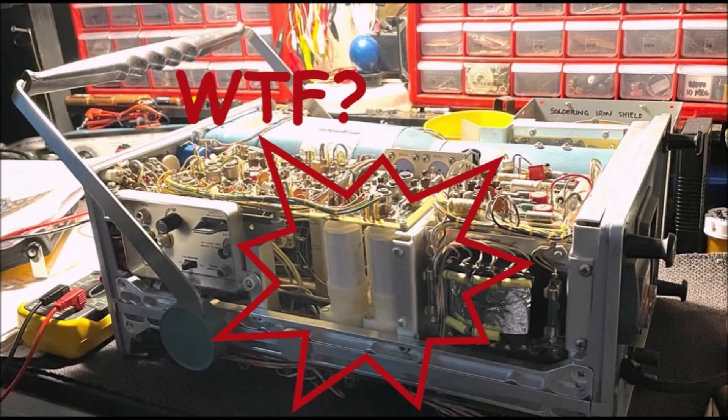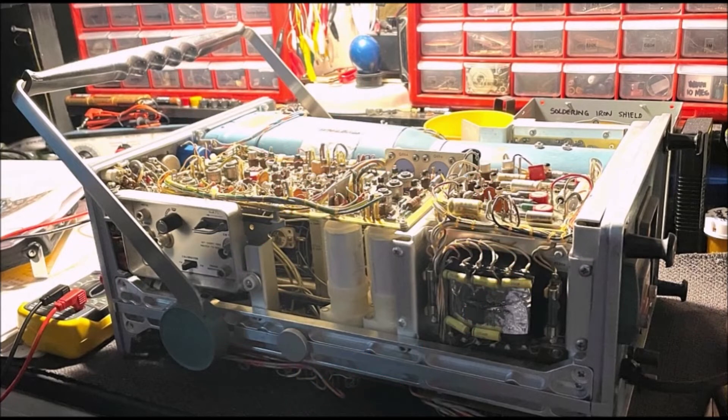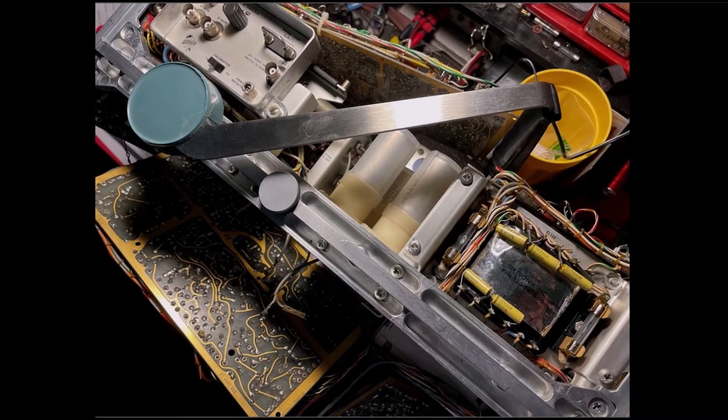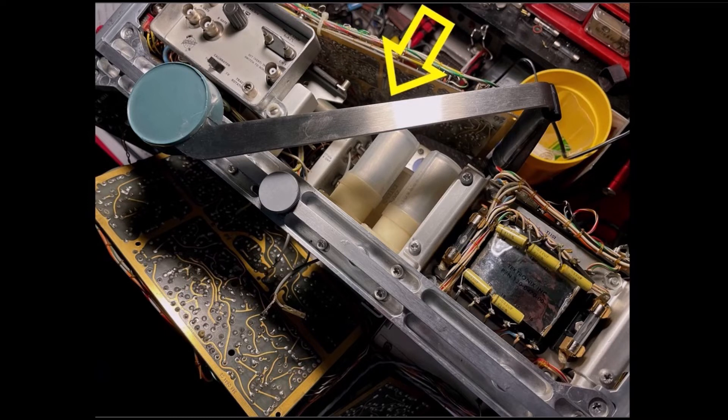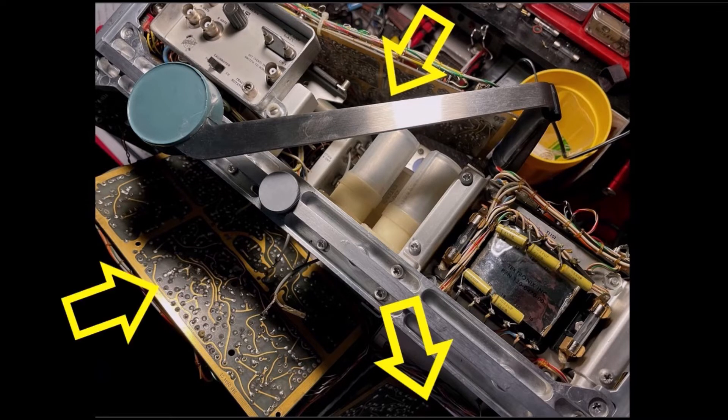Either they were confident that no one would ever have to mess with those capacitors, or they didn't think people would be working on these things 50 plus years later. Anyway, to access these filter capacitors you have to remove the B sweep board, the Z axis board, and the A sweep board.